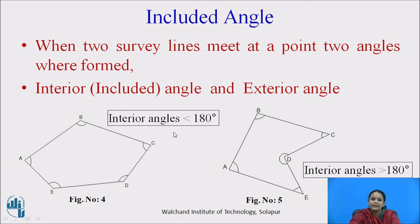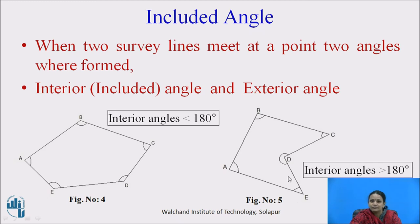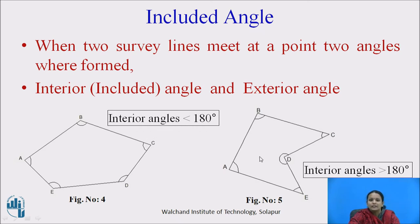Normally, interior angles are less than 180 degrees. In figure number four, all the interior angles A, B, C, D, and E are less than 180 degrees. However, this is not always the case. In figure number five, angles A, B, C, and E are less than 180 degrees, but angle D is greater than 180 degrees. So included angles may be less than or greater than 180 degrees, depending on the site conditions or how the survey was carried out.